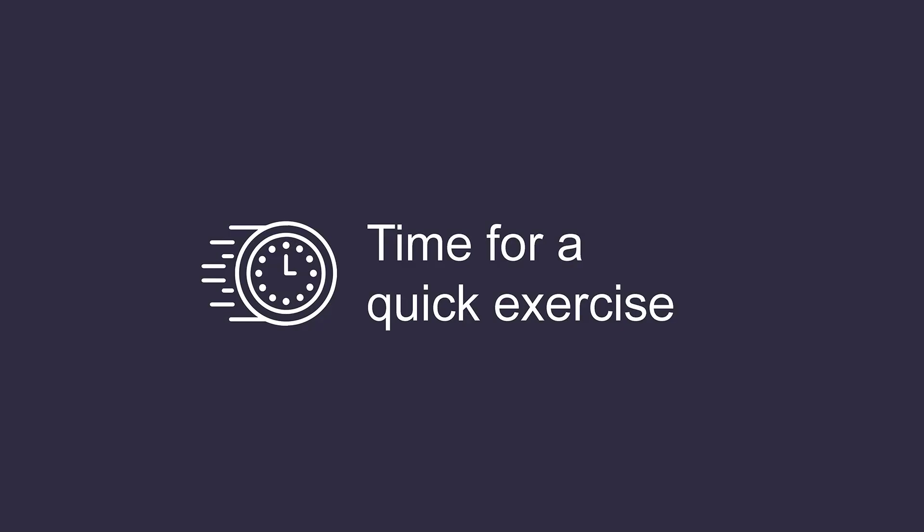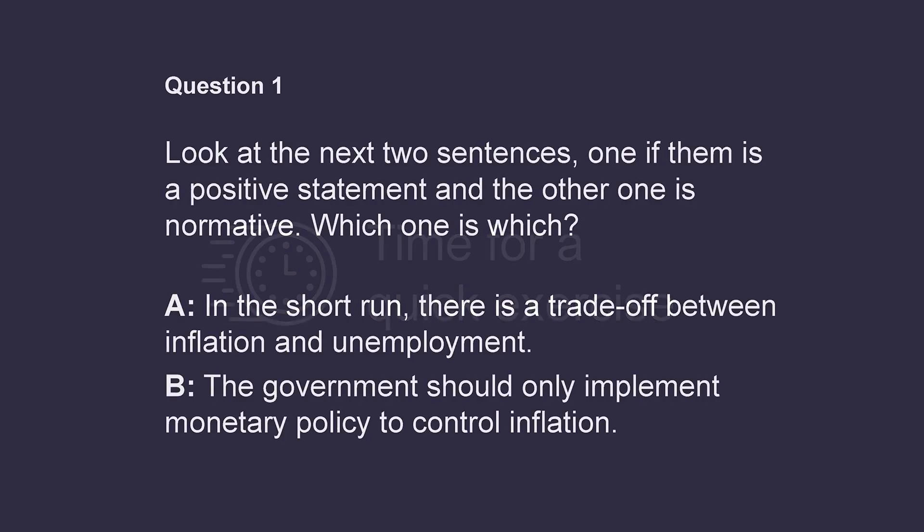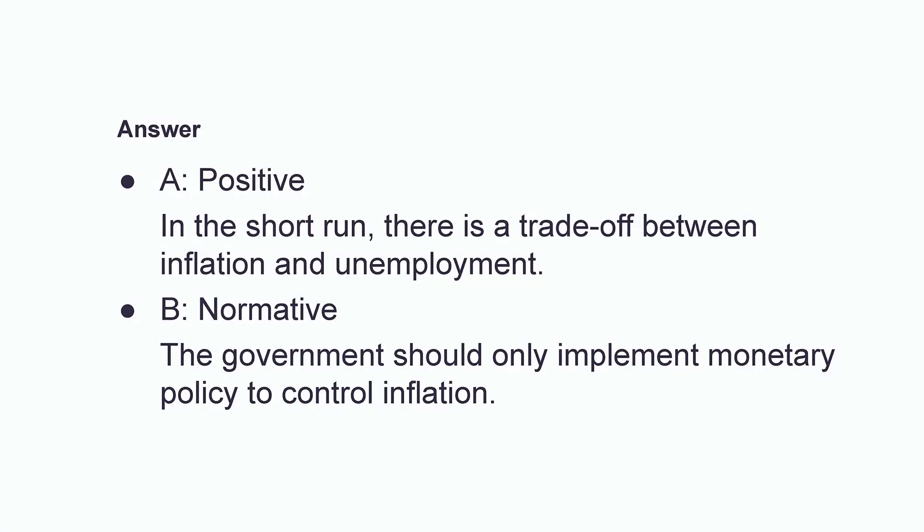With everything we've covered, here is an exercise to help us think as economists. Look at the next two sentences — one is a positive statement and the other is normative. Which one is which? A: In the short run, there is a trade-off between inflation and unemployment. B: The government should implement monetary policy to offset the economic recession. If you think A is positive and B is normative, you are correct. The first tells us a fact — the inverse correlation between inflation and unemployment in the short run, which is the Phillips curve. The second incorporates values, suggesting the government should use monetary policy to control inflation, which is based on monetarism.